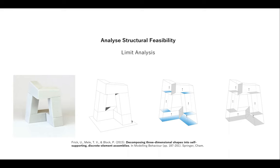When we find the internal forces at the joints and check if they meet the constraints, we understand whether the overall assemblage is structurally feasible — it is equilibrated and safe. Otherwise it starts to fail: sliding, separating, or rotating with respect to each other. Several types of failure can happen if these constraints are not satisfied. This is the main concept of limit analysis.